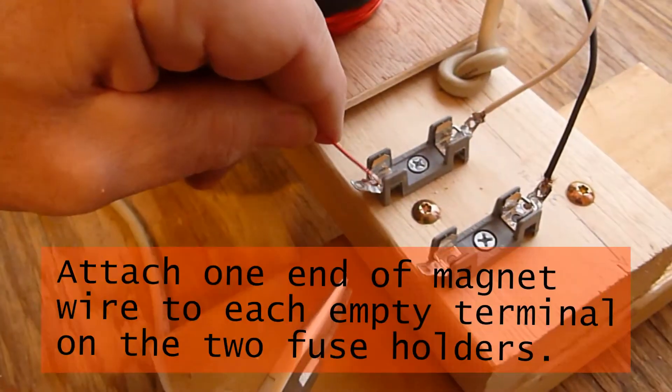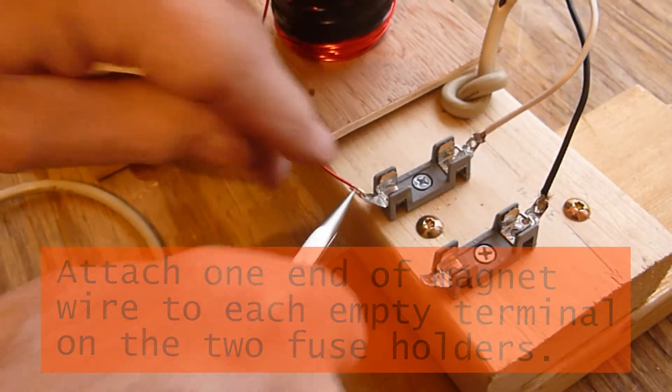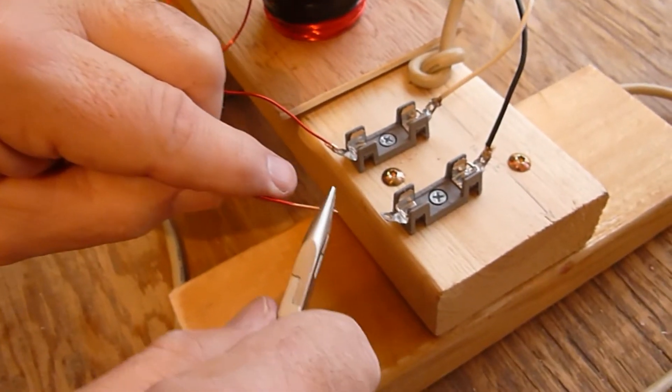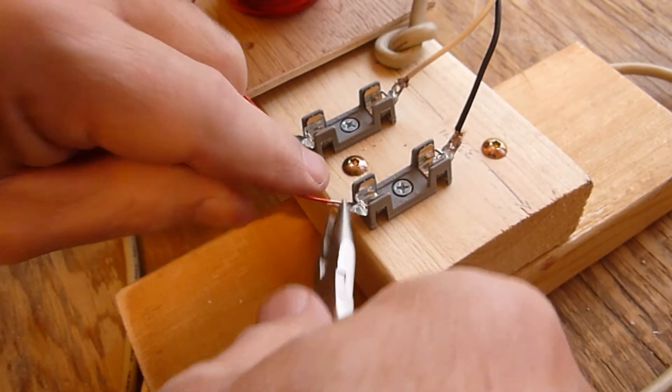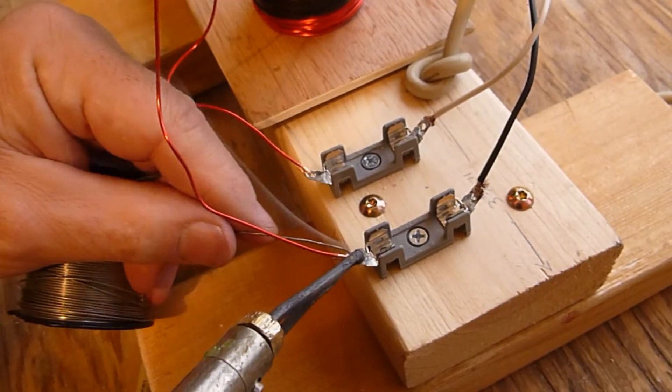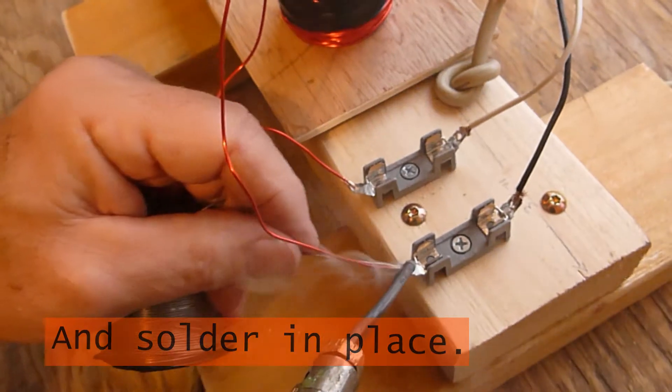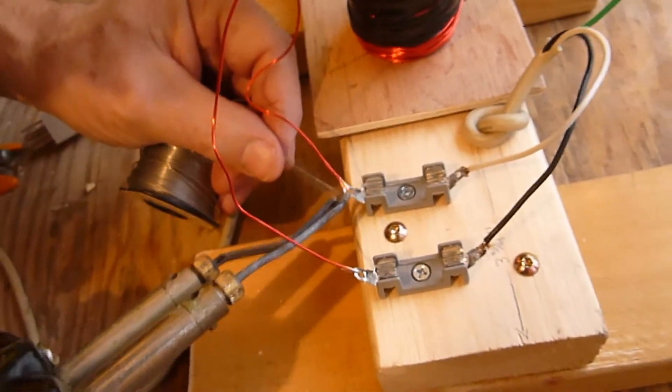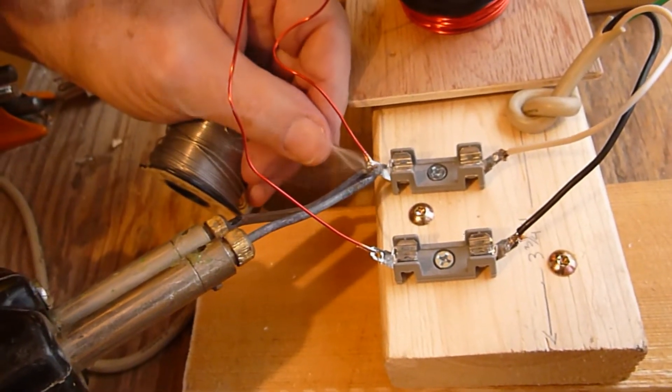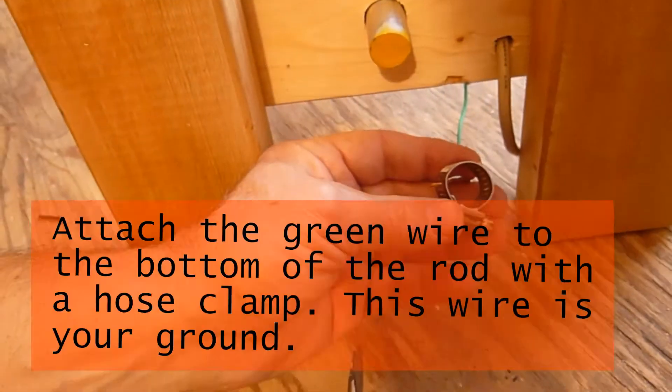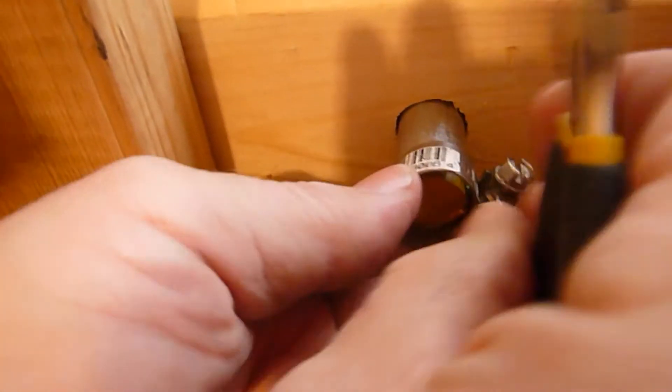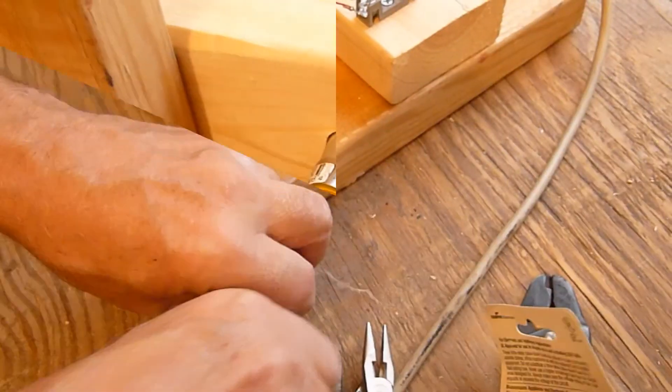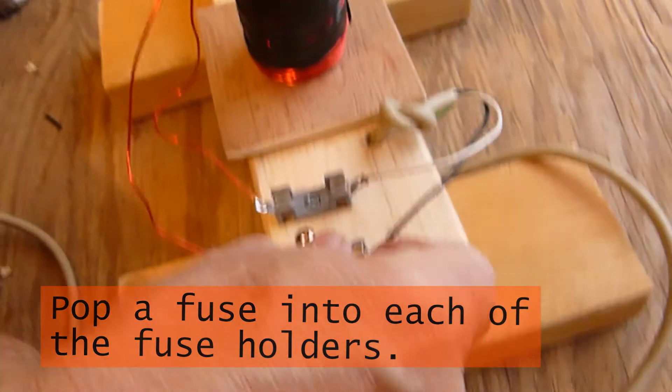Carefully use a knife to scrape off the enamel insulation from both ends of the magnetic wire and then attach one end of the magnet wire to each empty fuse holder and carefully solder the wires to the fuse holder connections as shown. Attach the green wire to the bottom of the rod with the hose clamp as shown. This wire is the ground and we do this for safety reasons. Insert a 7 amp fuse into each of the two fuse holders.